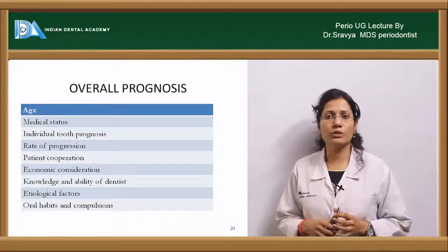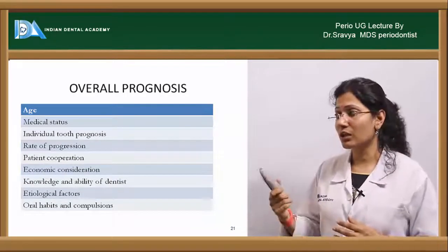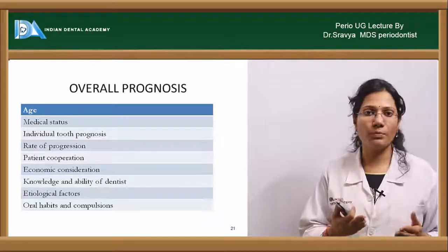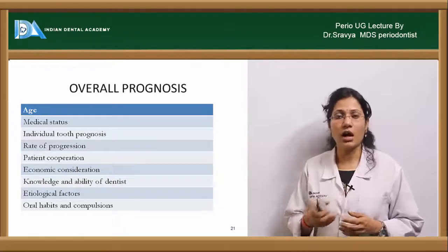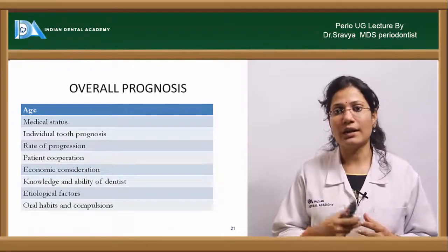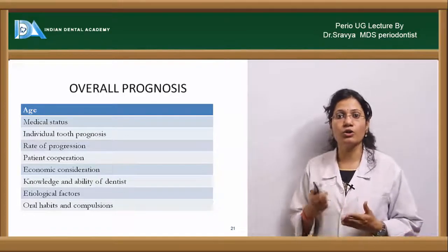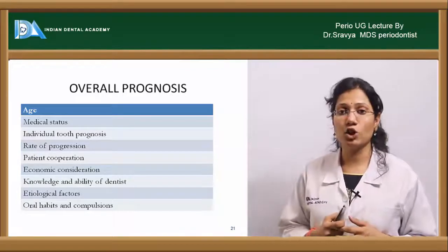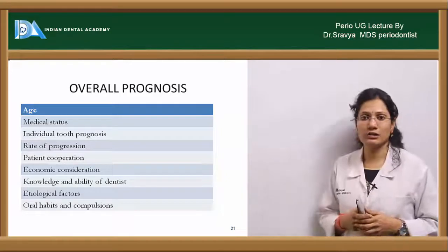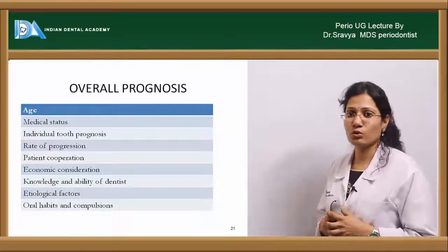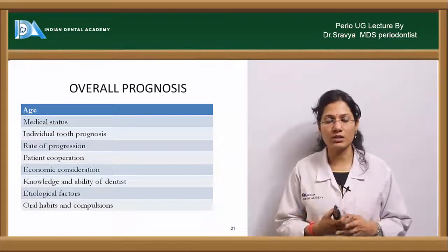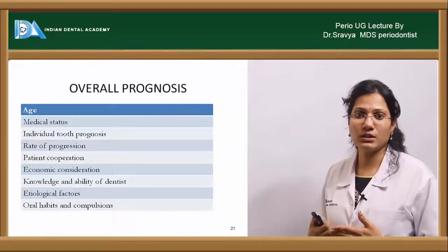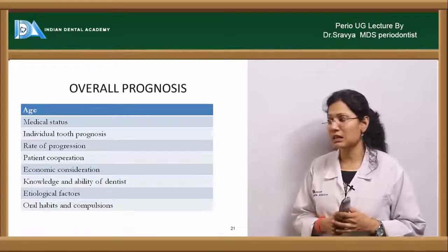What are the factors that determine your overall prognosis? Your age, the medical status of the individual, individual tooth prognosis, local factors, rate of disease progression, patient cooperation, and economic consideration. A patient who comes to you with a low socioeconomic status cannot afford an implant, so you need to consider the socioeconomic status of the patient. Then knowledge and ability of the dentist, and etiological factors — if the etiological factors are just local factors, you can do elimination of the local factors; if there is systemic involvement, then you have to treat the systemic involvement. Oral habits and compulsions are also important.